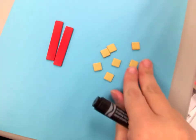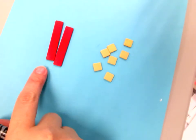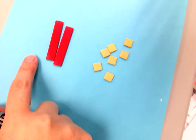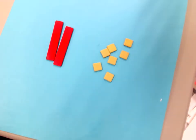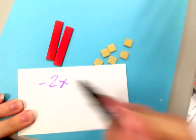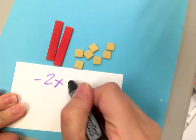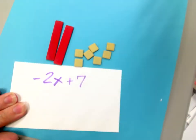Okay, what would this be showing me? Well, I have 2x, but they're negative, so that's negative 2x, right? Plus I've got 1, 2, 3, 4, 5, 6, 7 positive. So that's negative 2x plus 7.